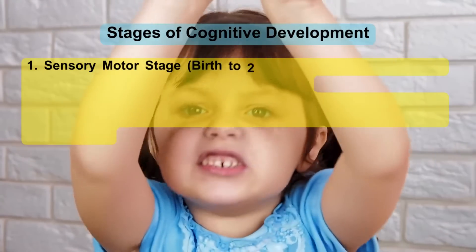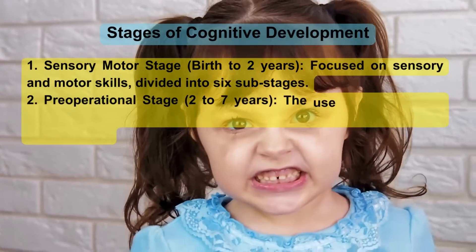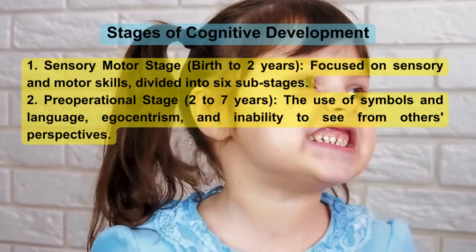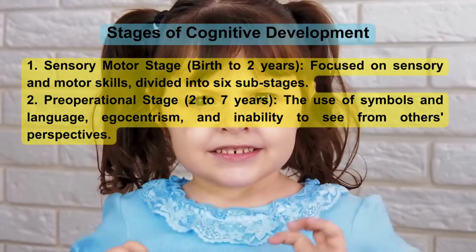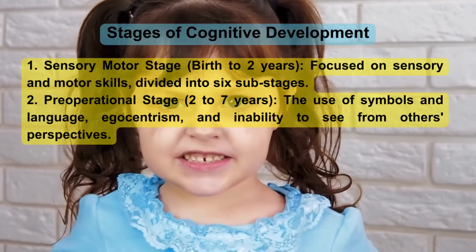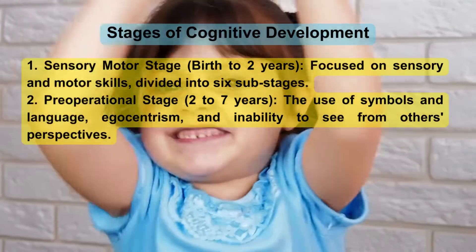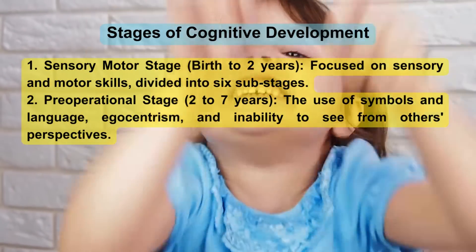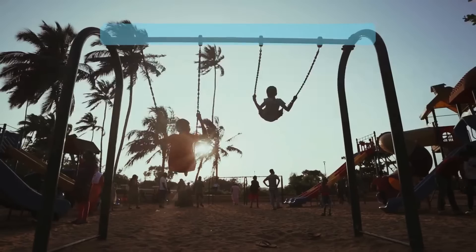The stages of cognitive development begin with: Stage 1, the Sensorimotor stage, from birth to 2 years, focused on sensory and motor skills, divided into 6 sub-stages. Stage 2, the Pre-operational stage, from 2 to 7 years, involves the use of symbols and language, egocentrism, and an inability to see from others' perspectives.